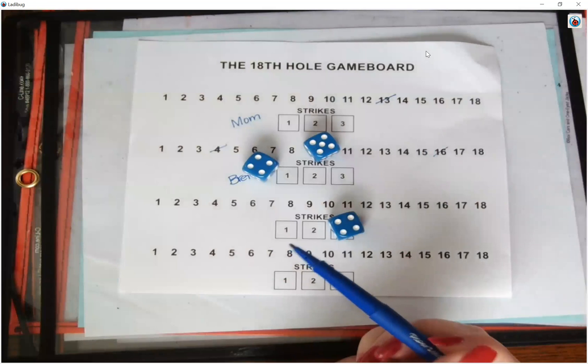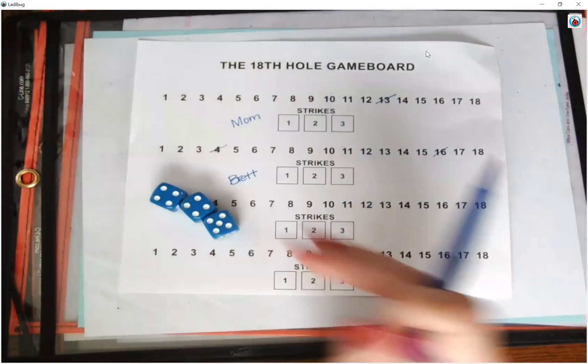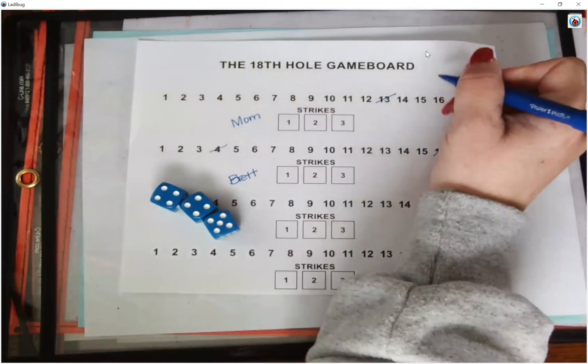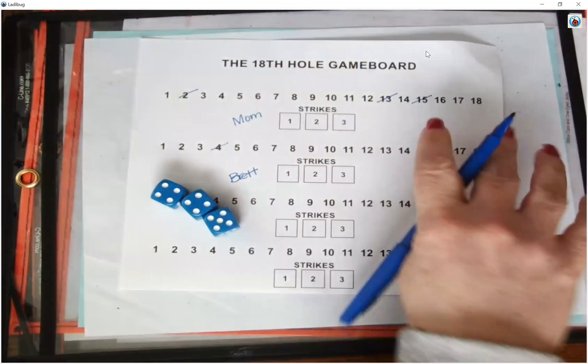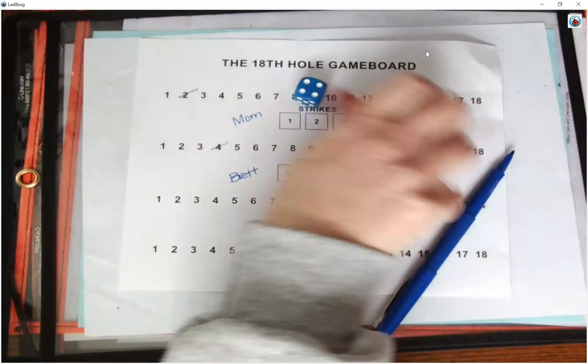All right so now my new target number is 13 again so I have to give another way to make 13. I'm going to do 15 minus 2 equals 13. So I crossed off my 15 and my 2. Your turn Brett.